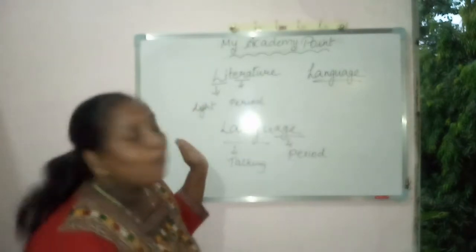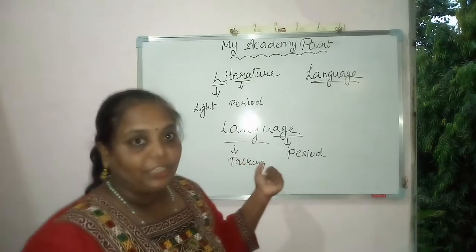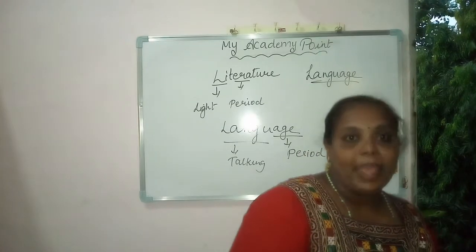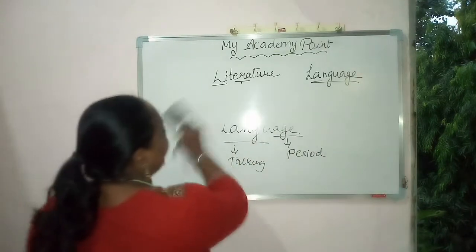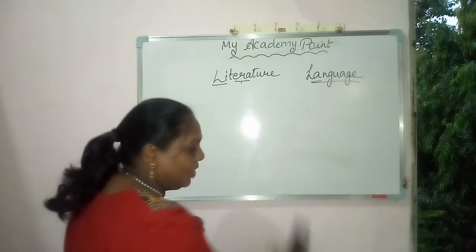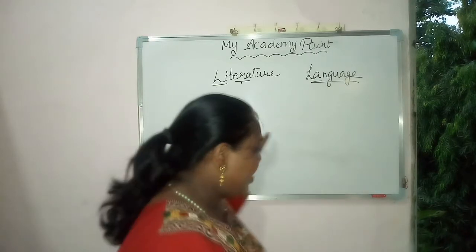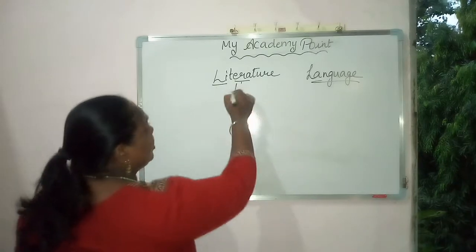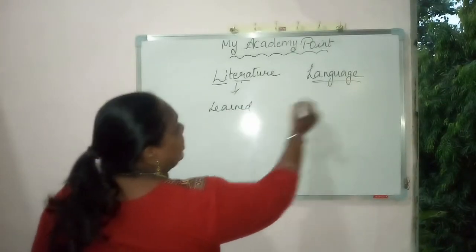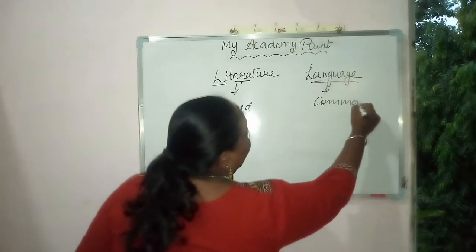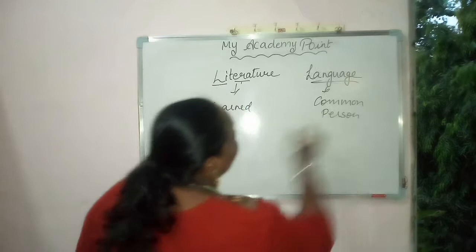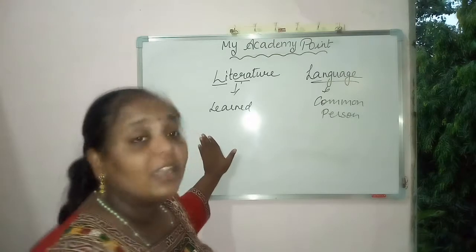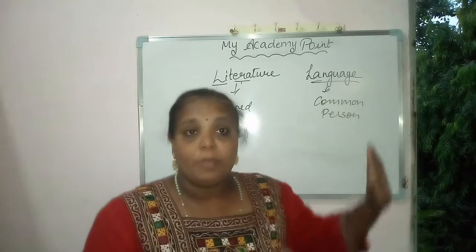So I have explained what is literature and what is language. Now what is the difference between literature and language? Literature means writing for learned persons, while language is for common persons. That is the only difference between literature and language — literature is for learned persons and language is for common persons.